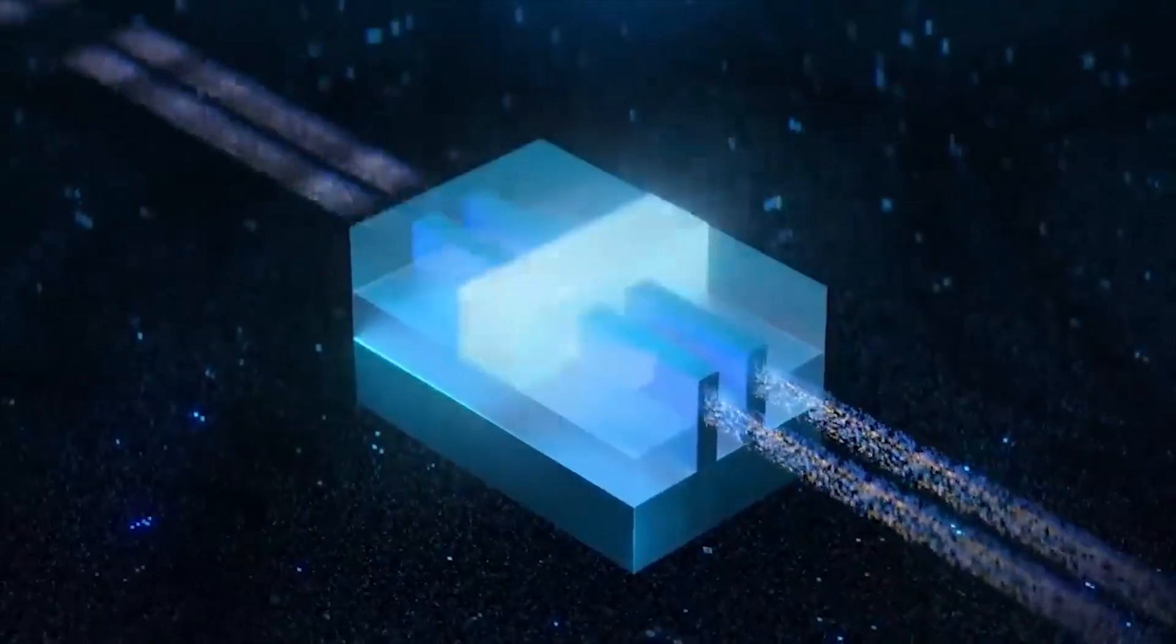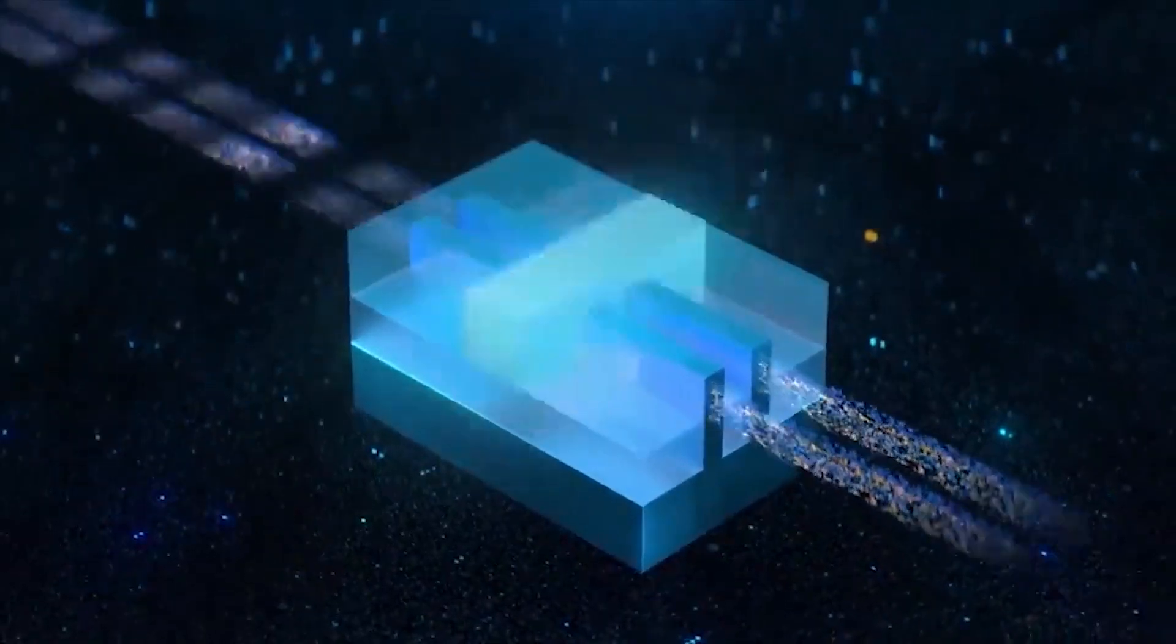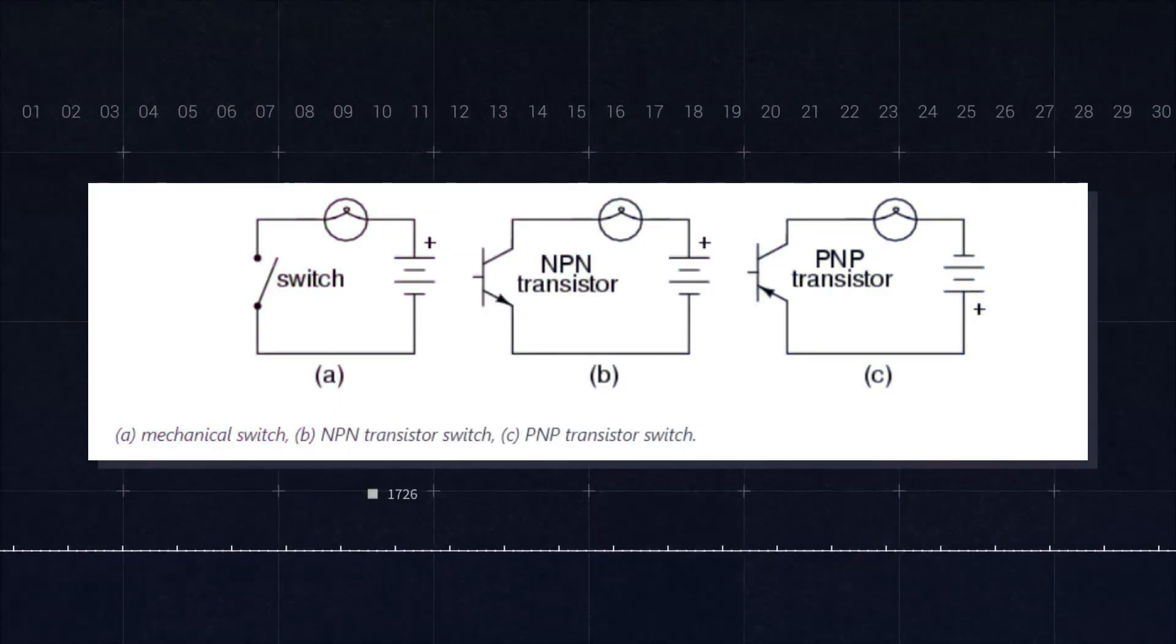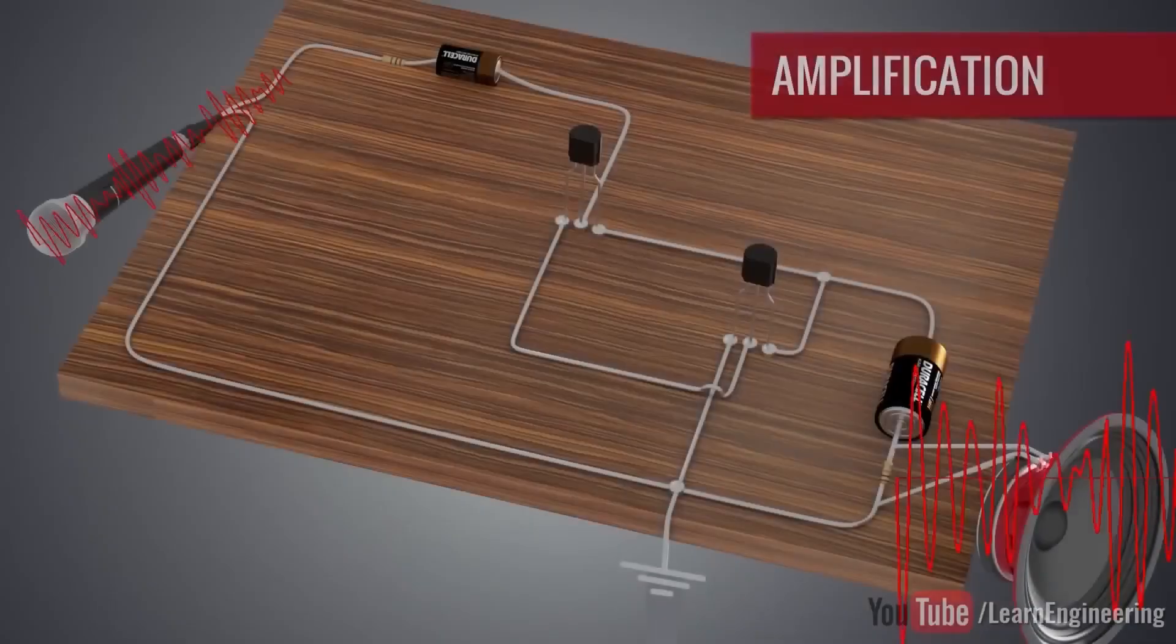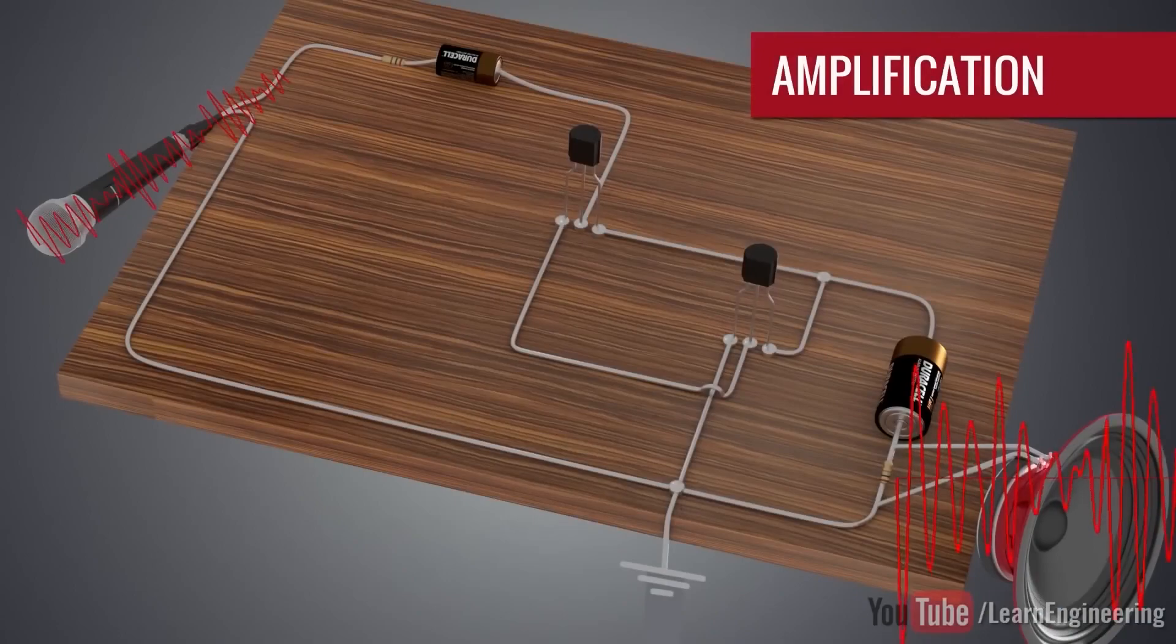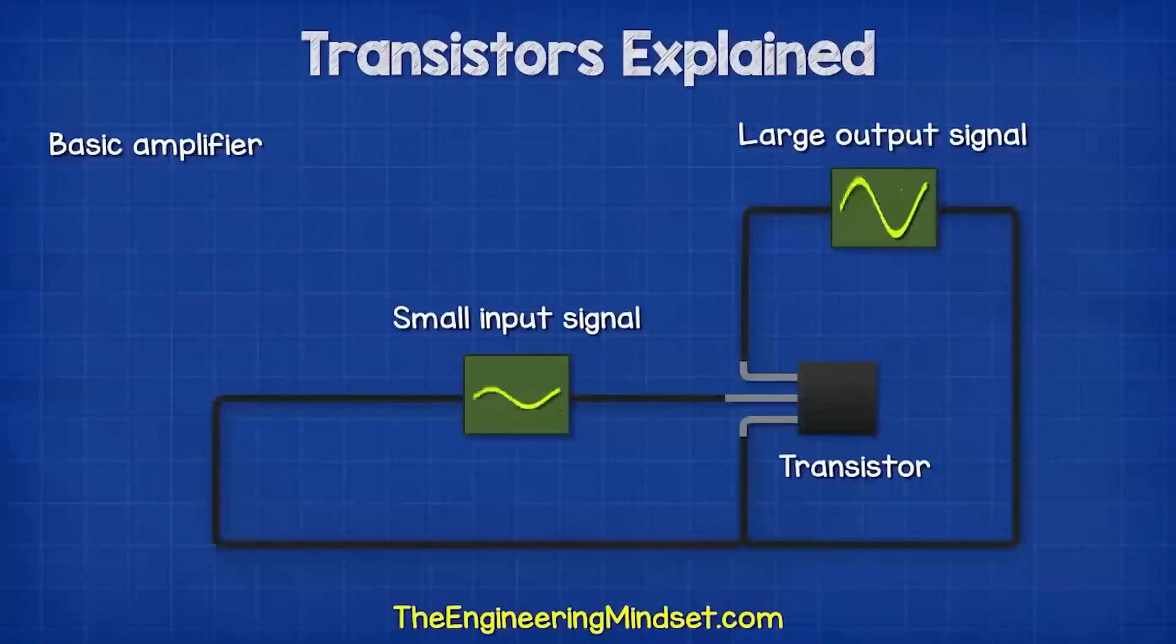A transistor is a small electronic component that has two functions. It can act as a switch or an amplifier. As an amplifier, it takes in a small amount of electrical current at one end and sends out a much larger amount of electric current at the other end.